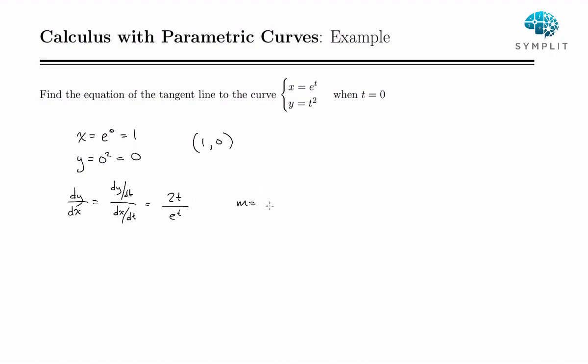So our slope, we just plug our t value in there. That's 2 times 0 over e to the 0, which is 0 over 1, which is 0. So we have a slope of 0. Using point-slope form, y minus 0 equals 0 times x minus 1. We get y equals 0. That's the equation of our tangent line.